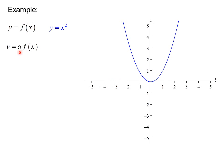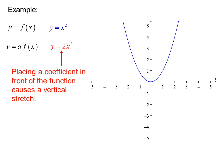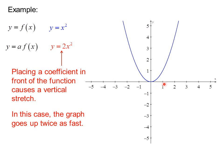If I put a constant in front of the function, as in Y equals 2X squared, placing the coefficient in front of the function causes a vertical stretch. So in this case the graph goes up twice as fast. Instead of going over 1 up 1, now we go over 1 up 2, and we can redraw the parabola.